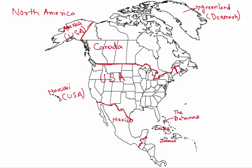Below Cuba is a small island which is Jamaica, and a fairly large island divided into two parts. The western part is Haiti — H-A-I-T-I — and the eastern part is the Dominican Republic.